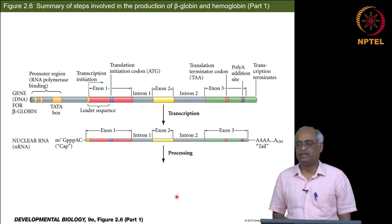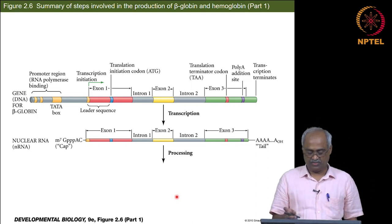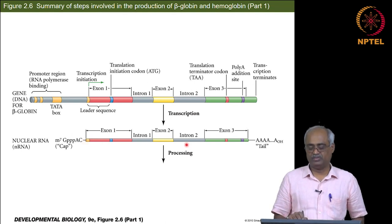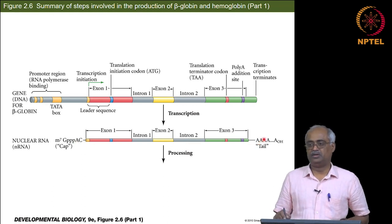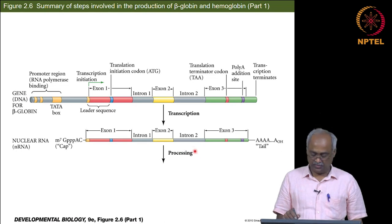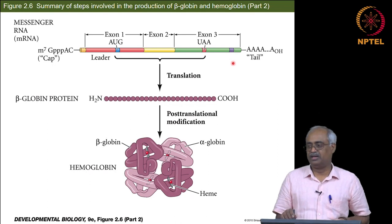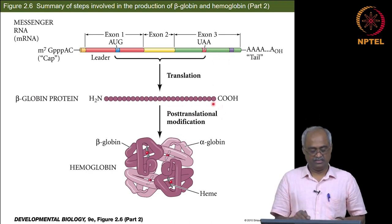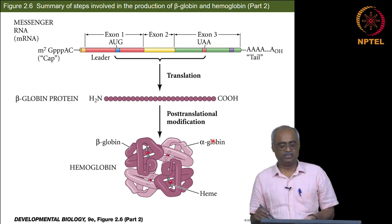Looking at transcription itself as the first step: as soon as the nascent mRNA comes out, you have the trimethyl G cap added at that stage - splicing is not done yet. These additions help in protecting RNA, and these additions at both ends happen before splicing. Then you have processing, which is essentially splicing, then you have the mature mRNA which comes into the cytoplasm where it gets translated, then you have the protein chain.